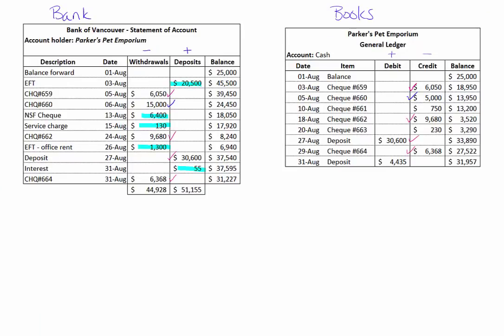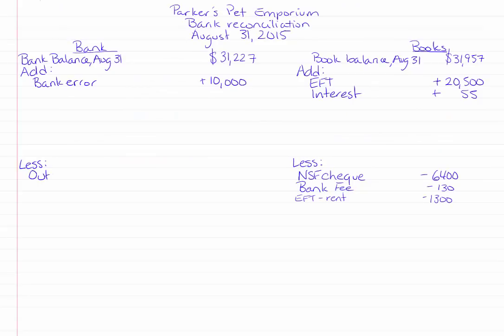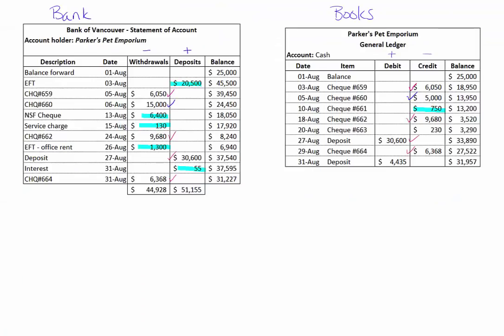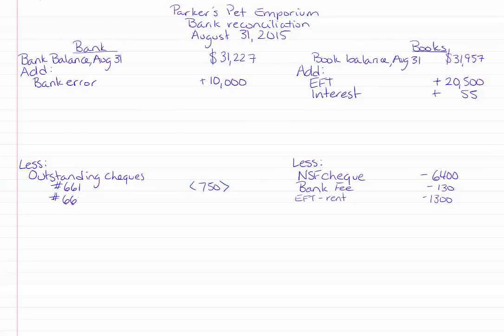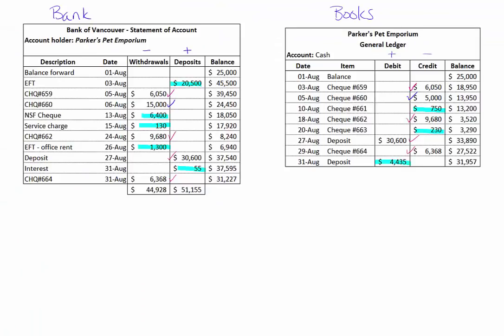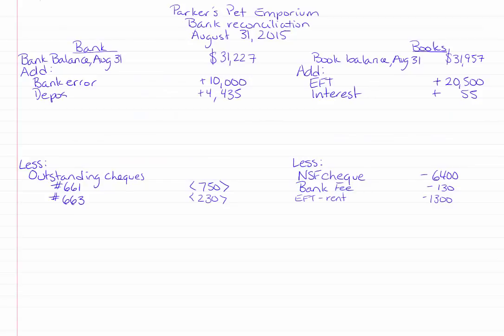Now let's go to our books side. Check 661 has not gone through the bank statement yet but has been recorded in our books — this is an outstanding check, so we flip it and put it on the bank side. Check 663 is the same: it's an outstanding check recorded in our books but not yet deposited by the supplier, so it hasn't come out of our account yet. Finally, the deposit of $4,435 was most likely deposited after end of day on August 31st, so it will hit the bank statement in the next period. We've recorded it in our books, so we flip it and add it to the bank side.